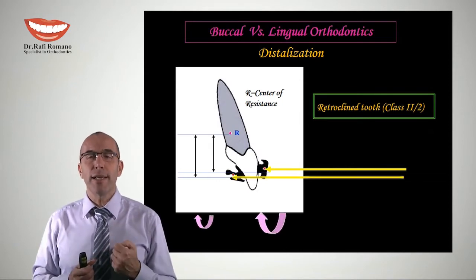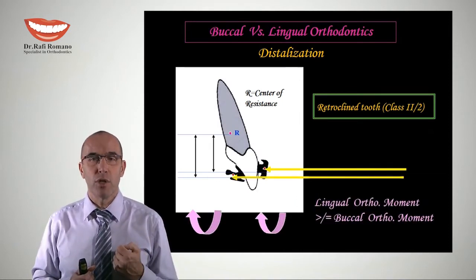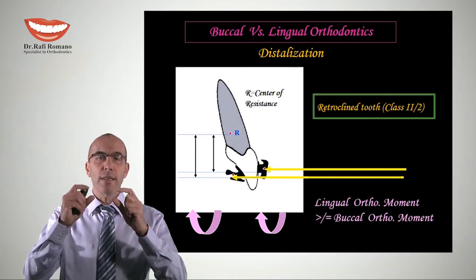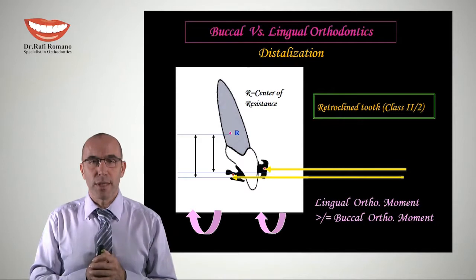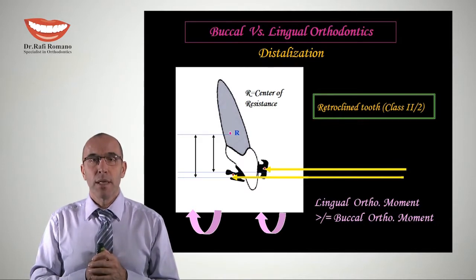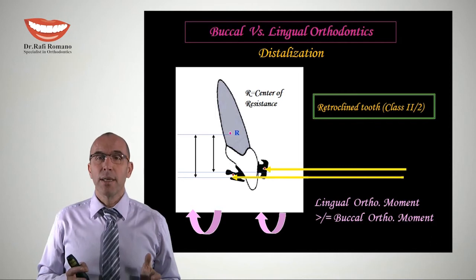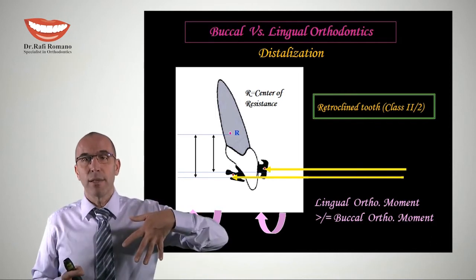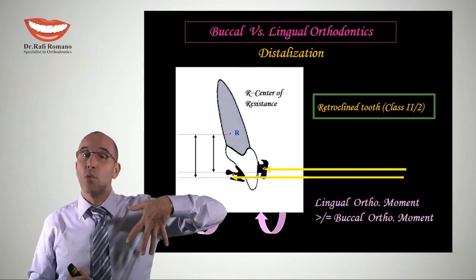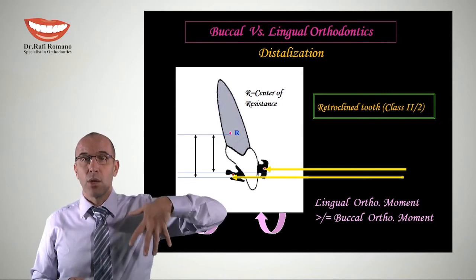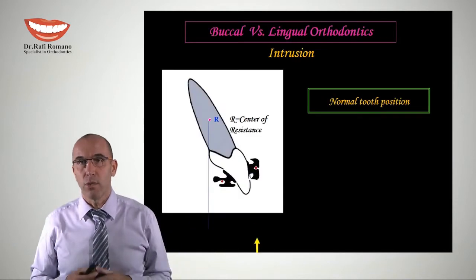In a retroclined situation, such as in Class II division 2, the two brackets — buccal and lingual — are now at almost the same height from the center of resistance. Does this make lingual orthodontics easier? Not necessarily, because in a retroclined tooth when we have a retroclination moment we are already in a very problematic situation, and we have to take that into consideration as well.